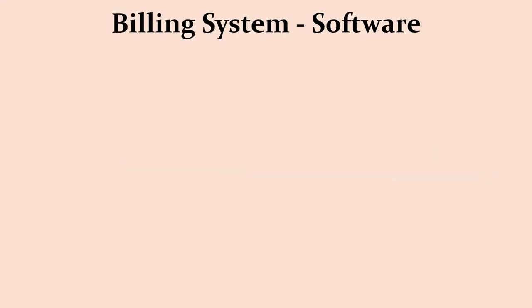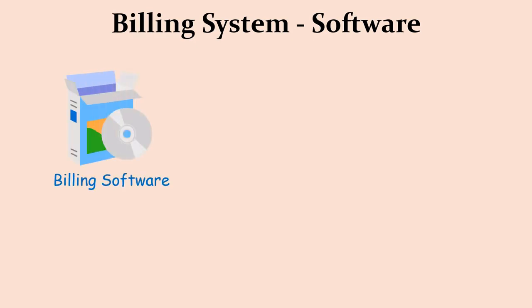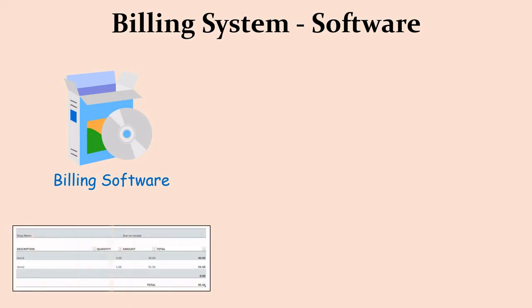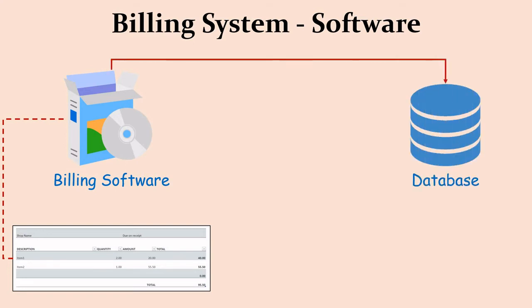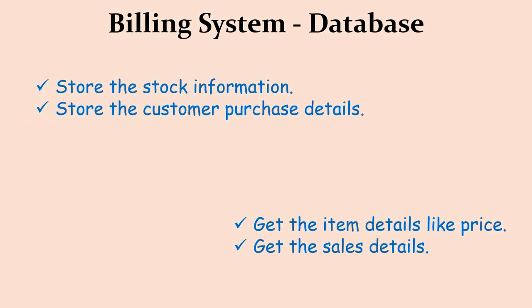Let us split this process into different parts to see how they are connected. The billing application or software is the one that brings the data entry form on the operator's screen. The operator uses the software to enter details and get details. The entered details go to, and the operator retrieves details from, the database. The database is a software used to store data. The billing application takes care of communicating with the database to store and retrieve data.